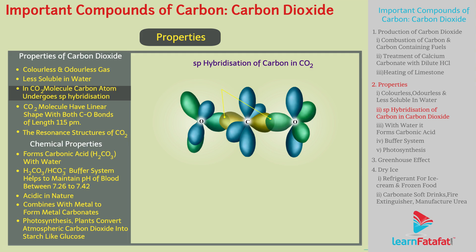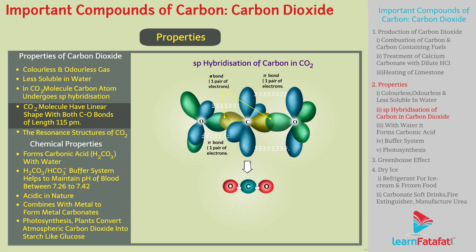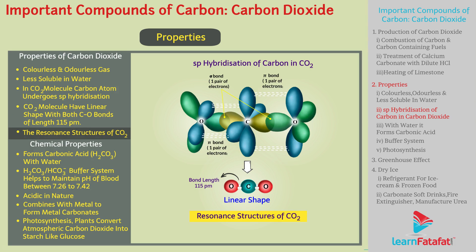Two sp-hybridised orbitals of the carbon atom overlap with two p orbitals of oxygen atoms to form two sigma bonds. The remaining two electrons of carbon are involved in formation of p-pi–p-pi bonds with oxygen. Due to this, the carbon dioxide molecule has a linear shape, with both carbon-oxygen bond lengths of 115 picometres. The resonance structures of carbon dioxide can be given as follows.